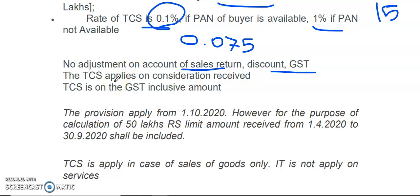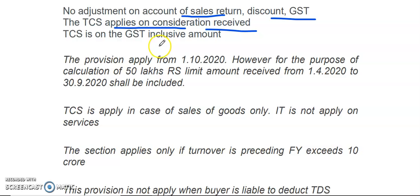The heart of this section is that TCS is applied on the consideration received. The section's applicability is only where the turnover of the seller is more than 10 crore in the preceding financial year, and he has received consideration more than 50 lakhs from the buyer. Then, on whatever amount exceeds 50 lakhs, the TCS is applicable. Further, the TCS shall be on the GST-inclusive amount.